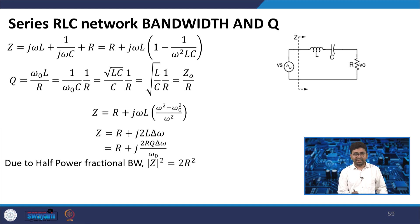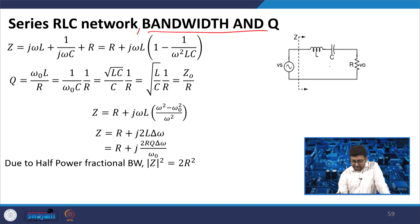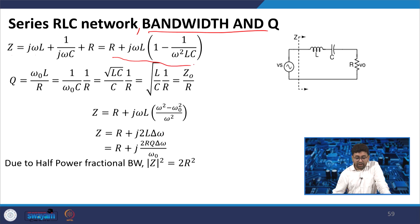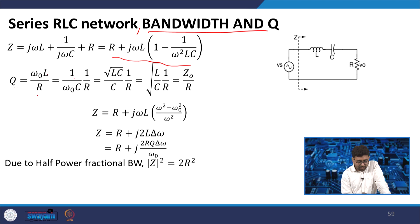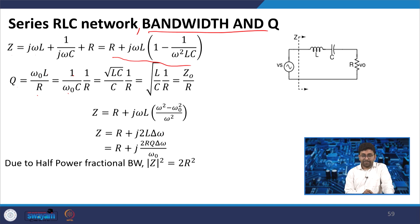Just as we saw the parallel RLC network, there is also a series RLC network for which we can define bandwidth and Q. For a series RLC network, Z = jωL + 1/(jωC) + R = R + jωL(1 − 1/(ω²LC)). Q in the series circuit is ω₀L/R or (1/ω₀C)/R — opposite to the parallel circuit case.